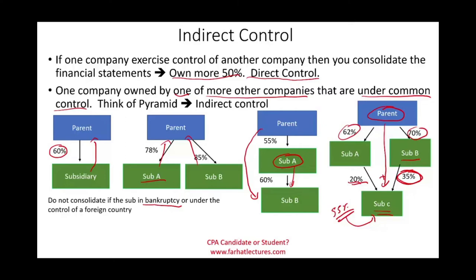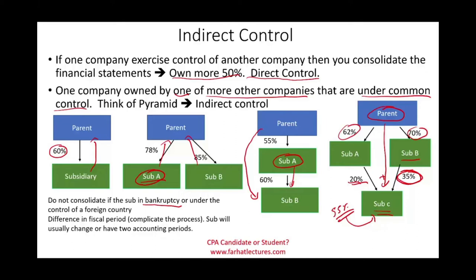Consolidation issues can also arise when there are different fiscal periods between the subsidiary and the parent company, which complicates the process. Usually in the real world, when that happens, the subsidiary will change their fiscal period to match the parent — whether the parent uses a fiscal or calendar year. Alternatively, the subsidiary may maintain two fiscal periods: one to consolidate with the parent and one for themselves.